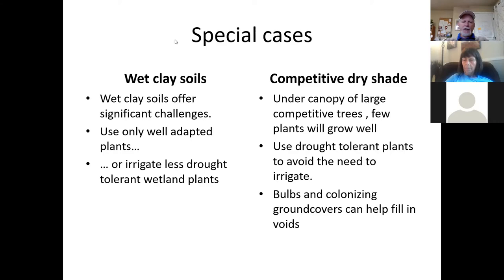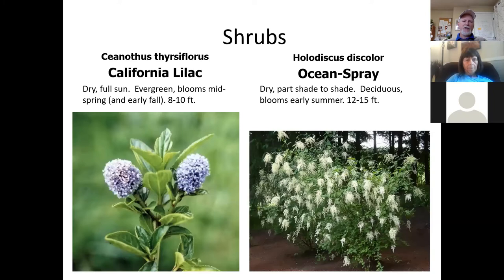One way to deal with dry shade sites is to put in a selection of very well-adapted plants that will naturalize and cover the space — including a lot of our native bulbs and several colonizing ground covers that help fill in spaces around the few larger shrubs that tolerate those conditions. In the interest of keeping this to an hour, I'm not doing any big trees today — not practical for most home gardeners in urban environments. We're going to talk about large shrubs to small tree categories, then shrubs, then perennials and bulbs.